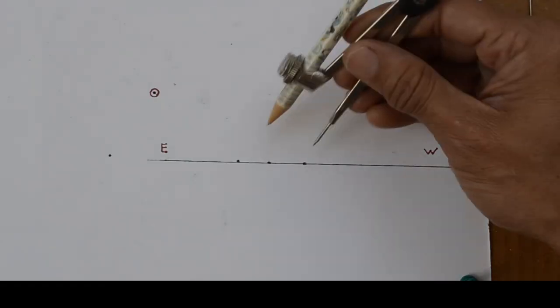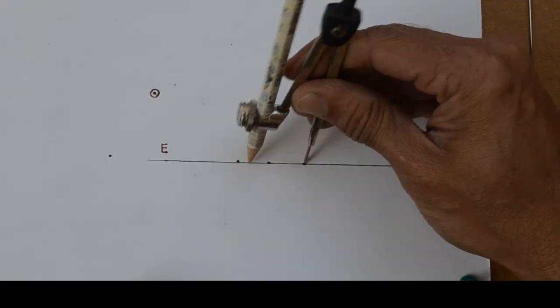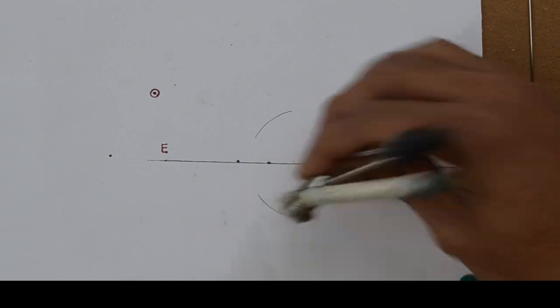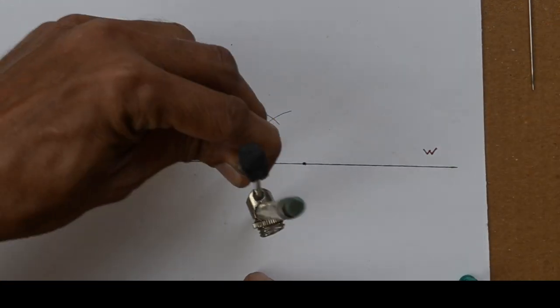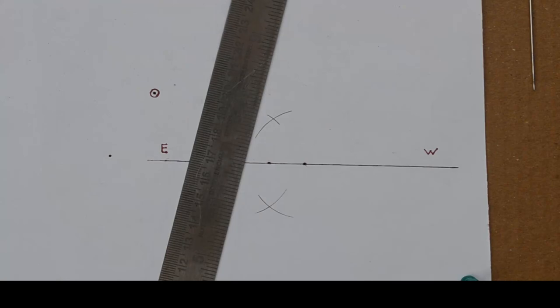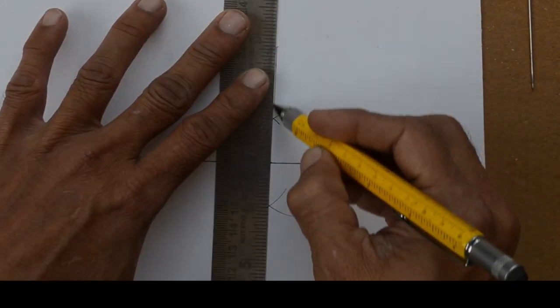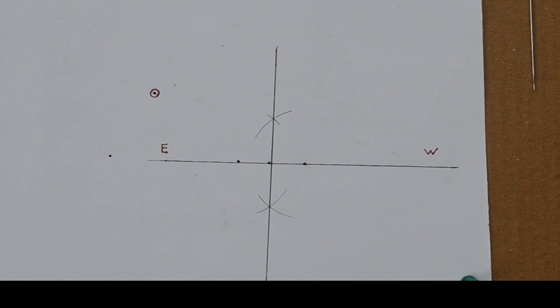With some simple geometrical construction, let us draw a perpendicular to this line. Can you guess which direction this end is pointing to?